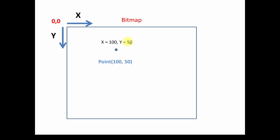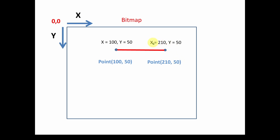You feed the Point its x and y location values, and you can name it something like 'startPoint'. Instead of always referring to x and y values for this point, you just say 'startPoint'. If you wanted to draw a line from this point to another point, you merely have to define the ending point with its coordinates — say (210, 50). The y values are the same but x increases, giving a horizontal line. Then you tell your Graphics pen object to draw that line from this point to that point.